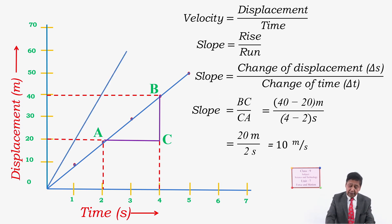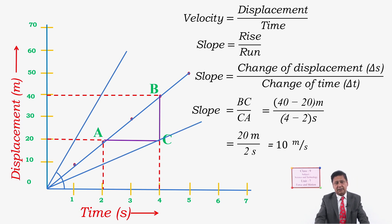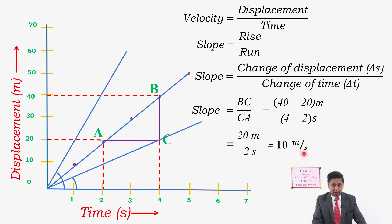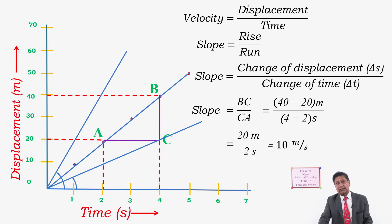If the slope is very steep — that is, the angle made by the slope with the x-axis is large — then the velocity is high, more than 10 m/s. If the slope is less inclined, the velocity will be less than 10 m/s. A steeper slope means higher velocity, and a less inclined slope means lower velocity.